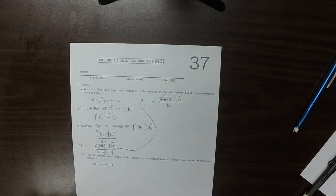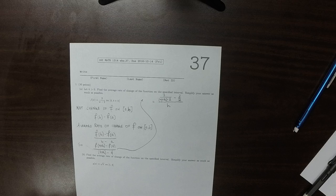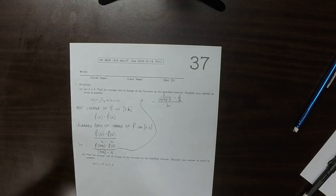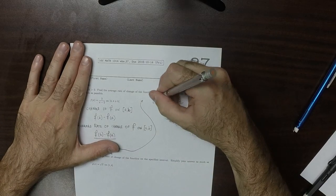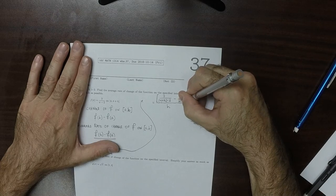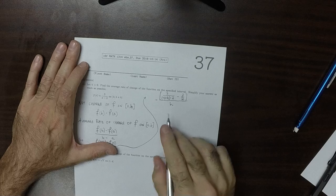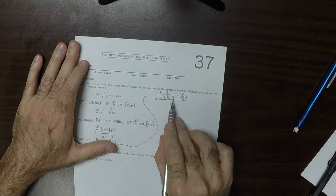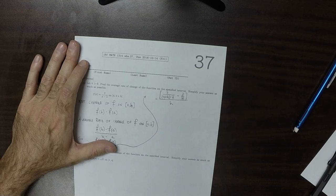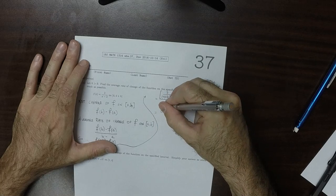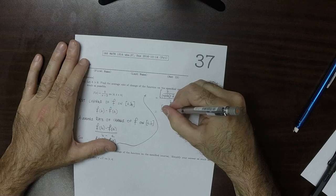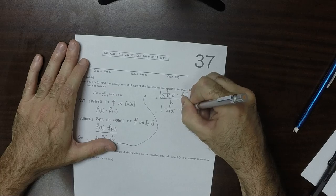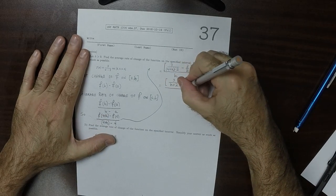And then we are asked to simplify this as much as possible. So, in the numerator, we can find a common denominator by cross multiplying. But before I do that, I'll observe that the 4+H and the minus 2 can be combined to be 3 over H+2, and then minus 3 over 2, and then this over H.